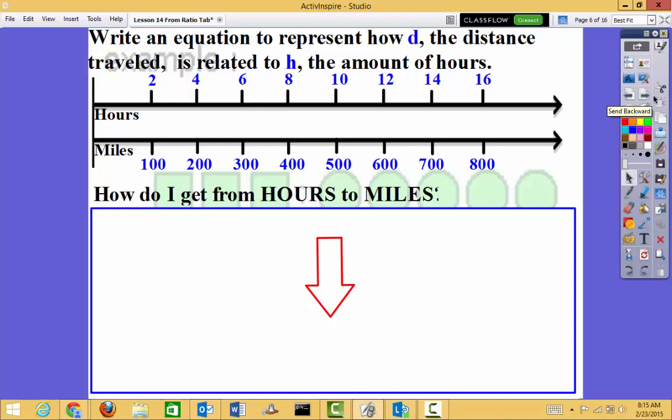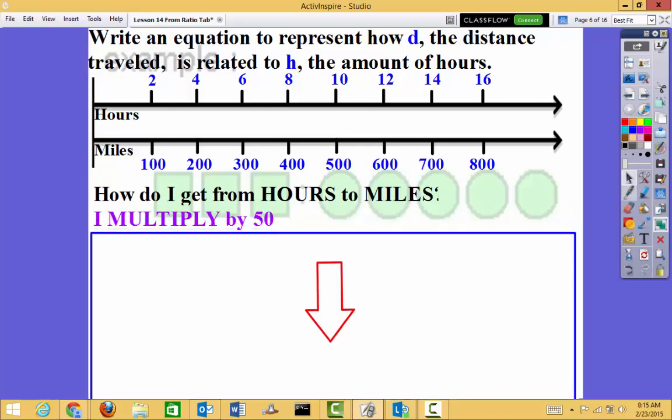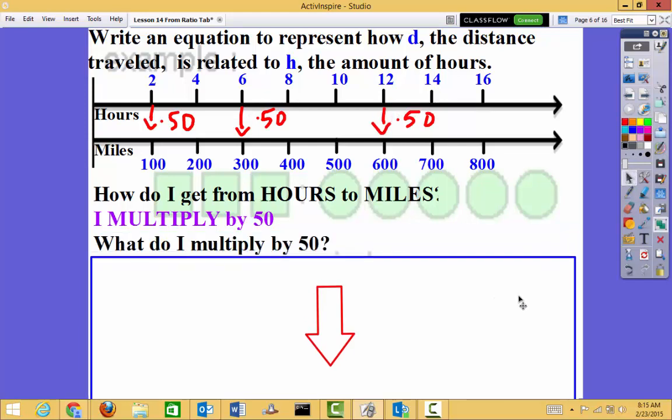Write an equation to represent how d, the distance traveled, is related to h, the amount of hours. So let's check. How do I get from miles to hours or hours to miles? Well, let's look. I'm multiplying by what? I'm multiplying by 50. It's the same. Every single thing here. I multiply by 50. How do I get from hours to miles? I multiply by 50.